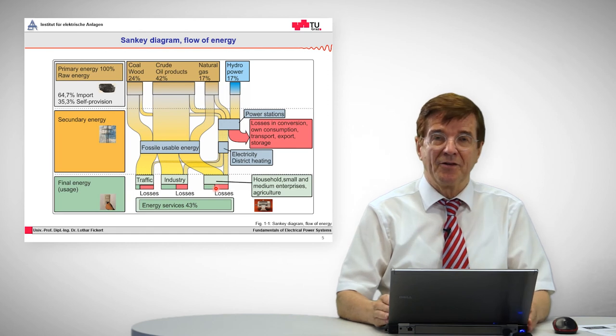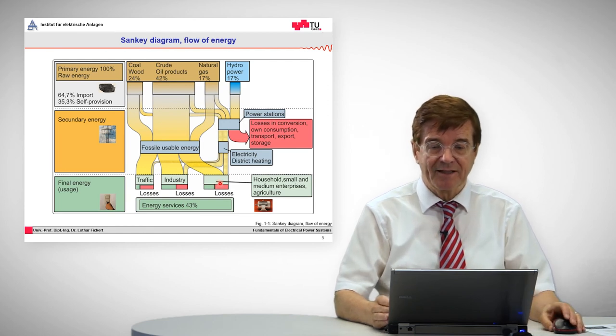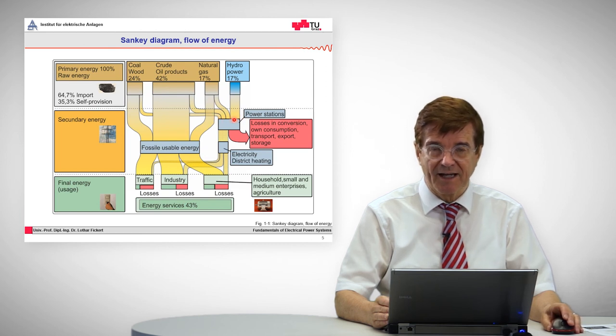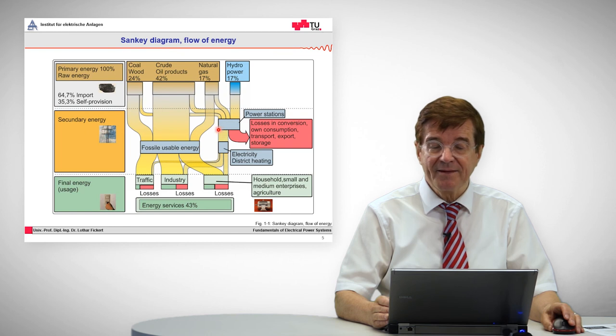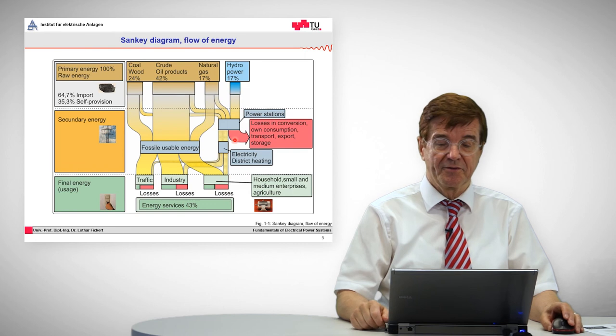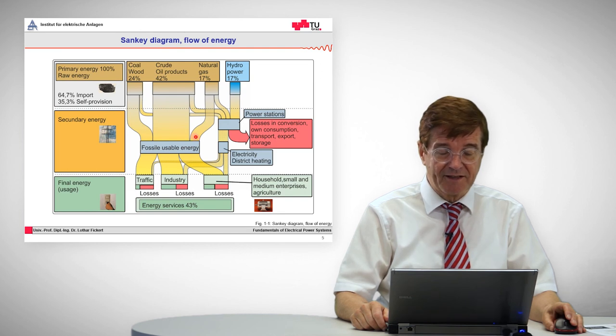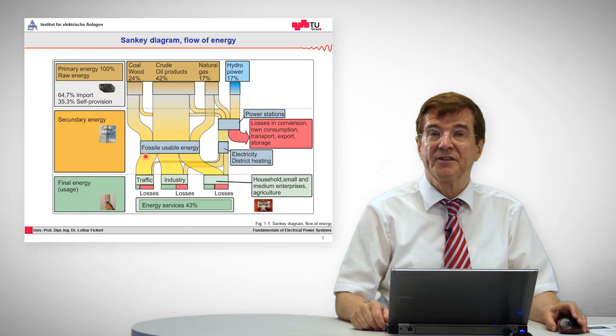What is always important about a Sankey diagram is that the input, or the width of these lines, is exactly the same as the output - the width of these two lines added together. We see it also here. This is the measure for the input from secondary energy and the output which goes as final energy to the consumers.